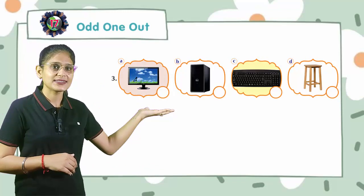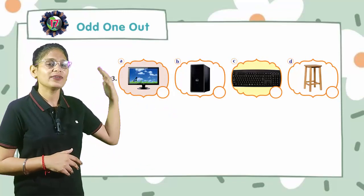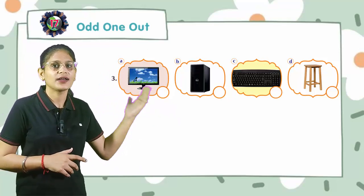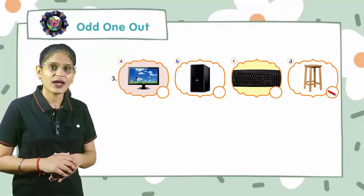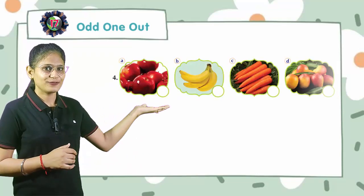Now come to the next, that is third. In third we have three different parts of our computer but in the D we have a table. So it is different. So cross out table.